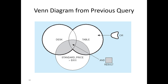In the Venn diagram you draw circles, and it will help you understand what will be included and what will not be included in the result. In this example, because the first statement includes either the word 'desk' or 'table', it will include both the desk circle and the table circle. Then the last condition is AND standard price greater than 300.